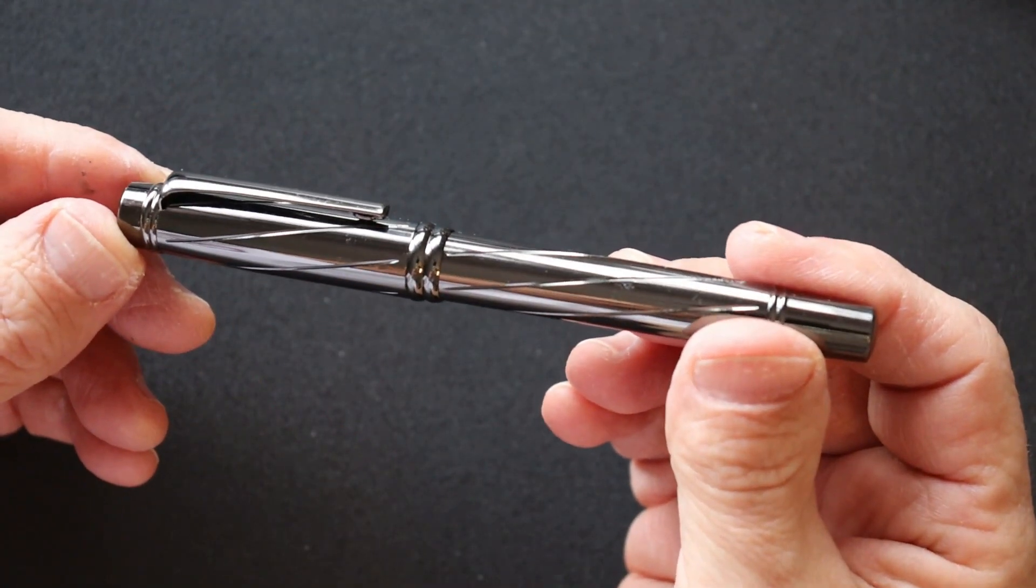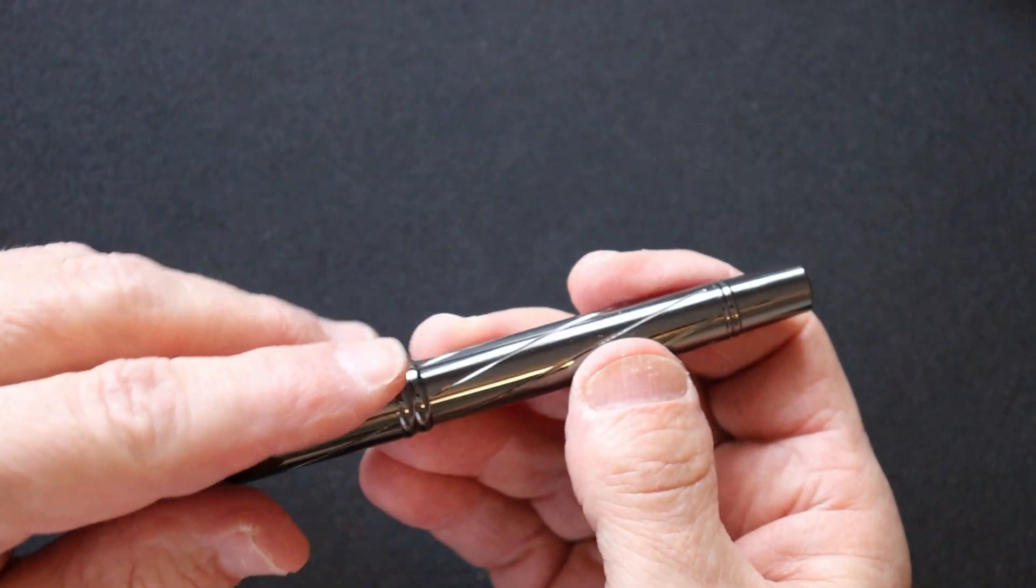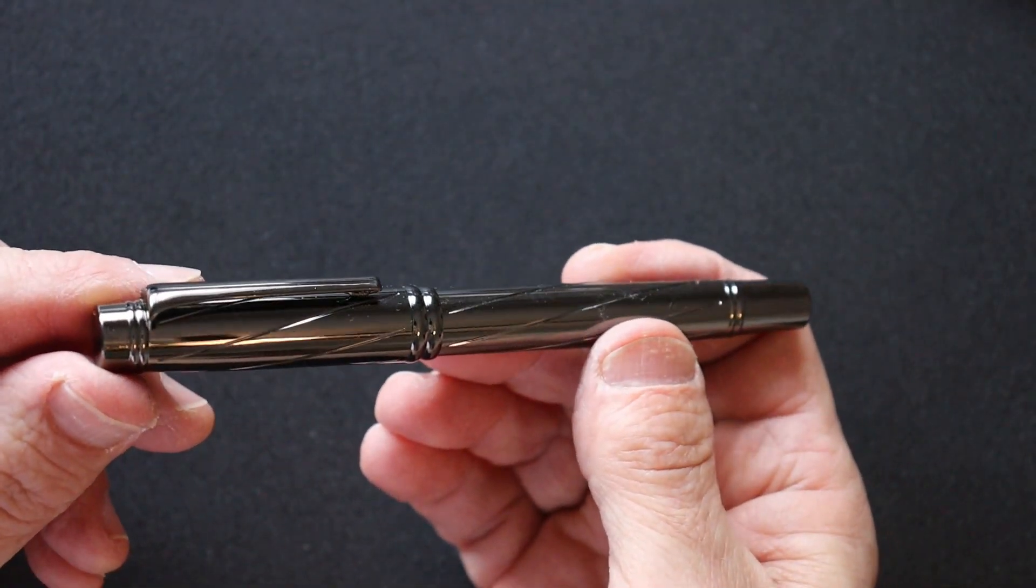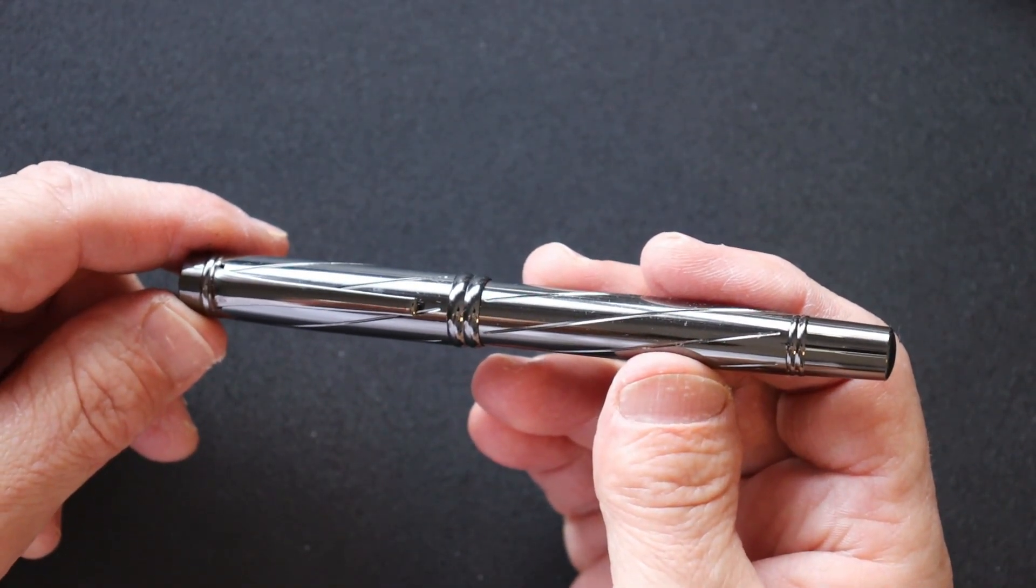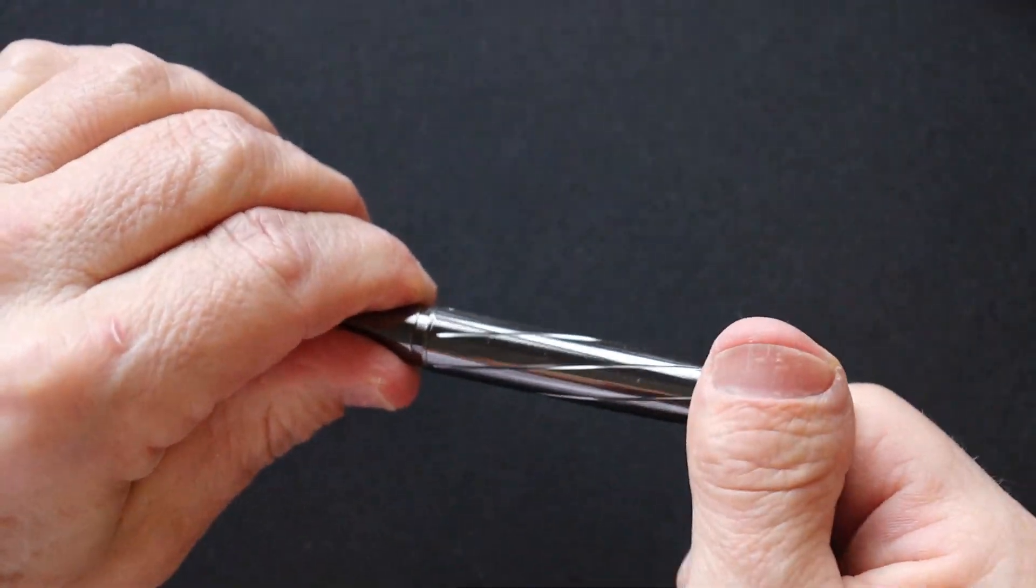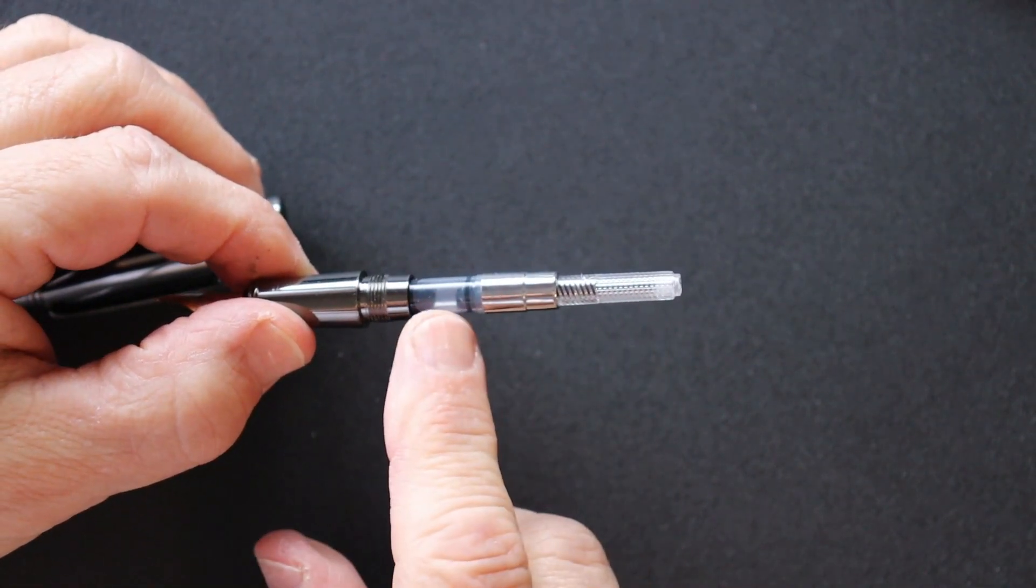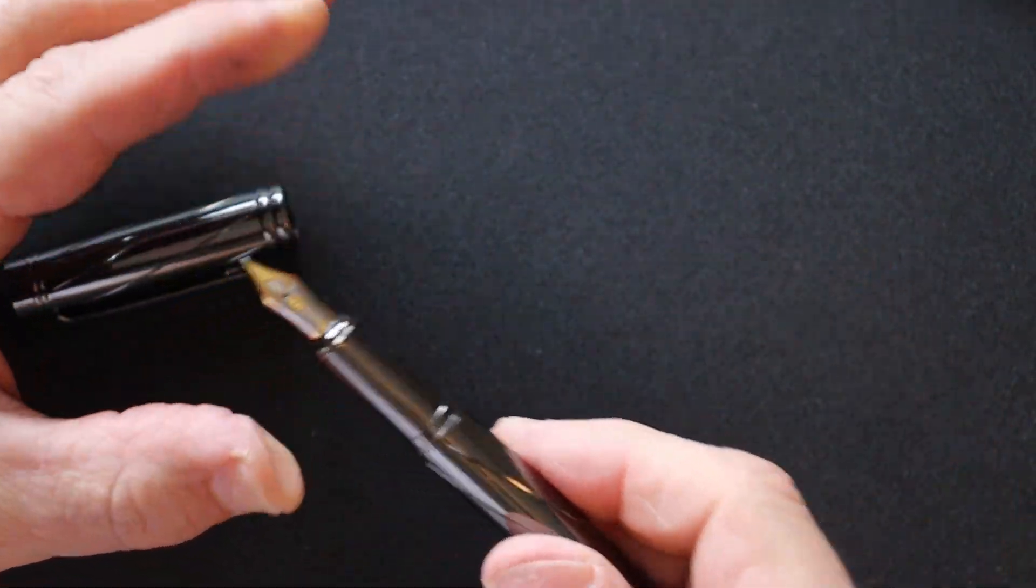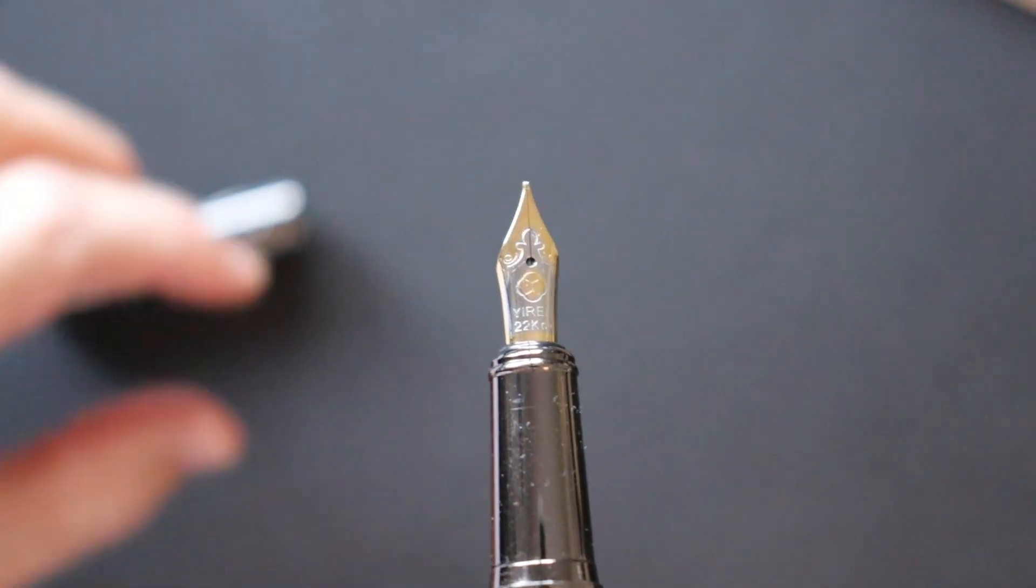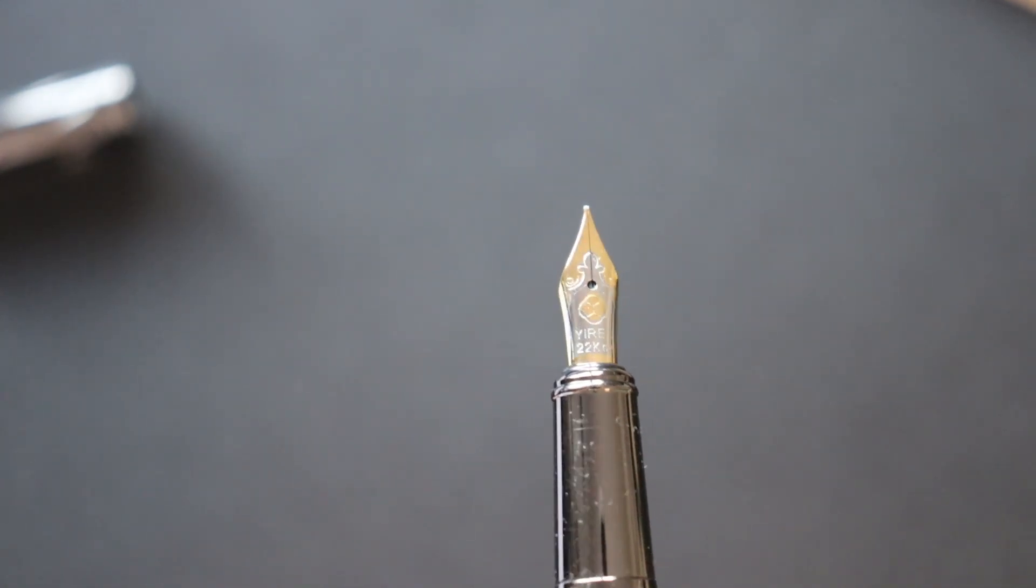All right, a tour of the Yiren 878. This pen usually goes for around six dollars. I have seen it upwards around ten, but you can get these for six dollars. They take a standard international cartridge and converter. The converter comes with it, a cartridge does not. The nib on these is a fine nib and it kind of writes more like a maybe a medium fine to medium, but you can only get them in the fine.